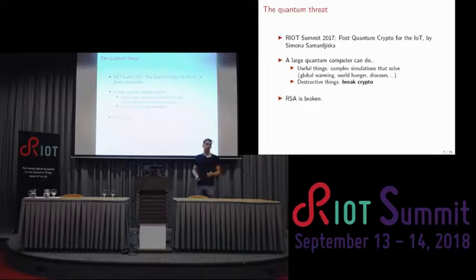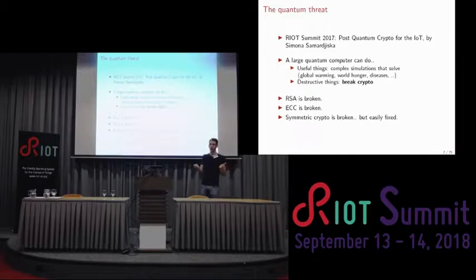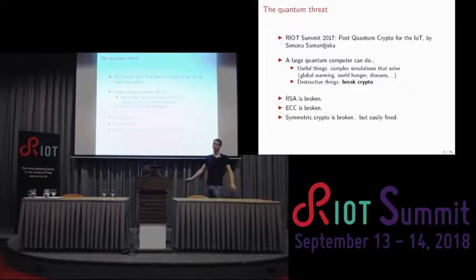RSA is completely broken. ECC is completely broken. When I say broken here, I mean that in a cryptographic setting — broken means it's not what we expect it to be. The most important thing is that public key crypto, as you know it, is going to change.